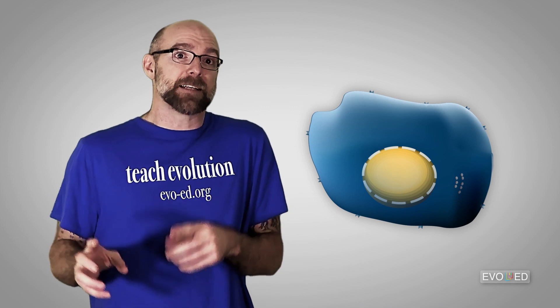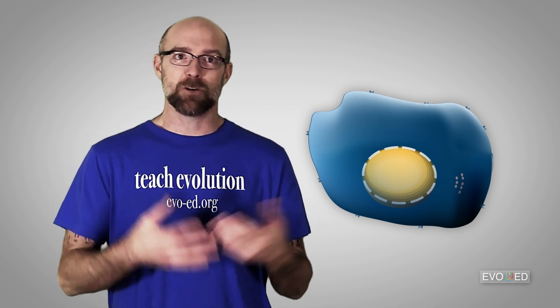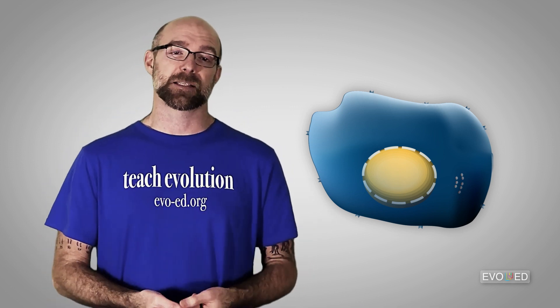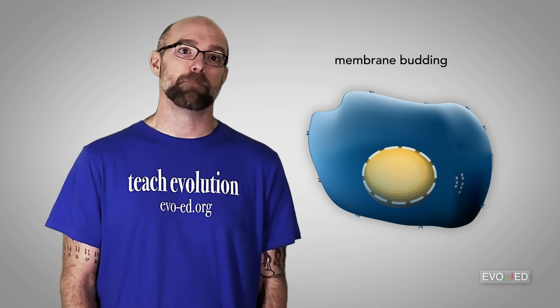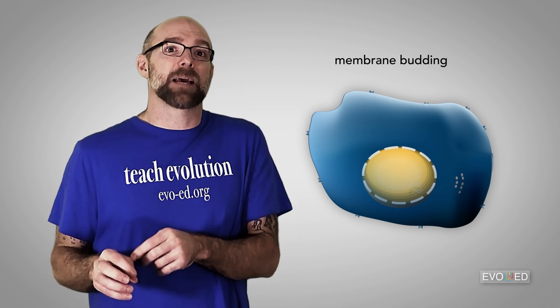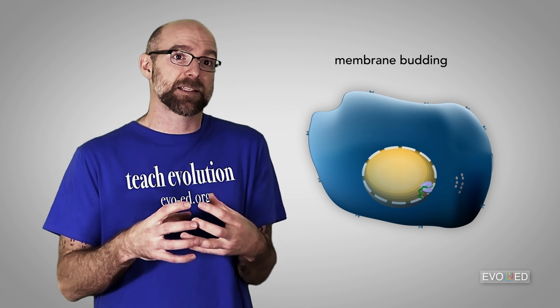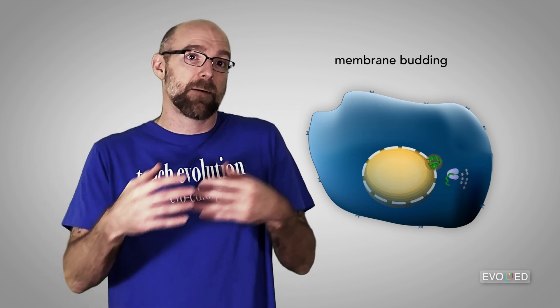For viruses that do have an outer membrane envelope, like the coronavirus, a different process is sometimes used called membrane budding. In this example, a viral capsid forms inside the cell and then travels to the cell membrane.